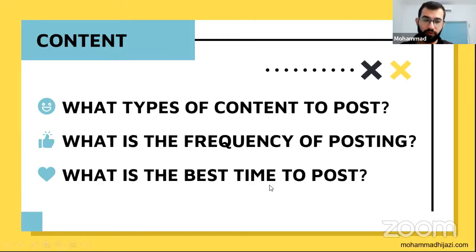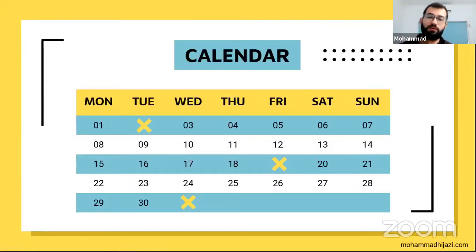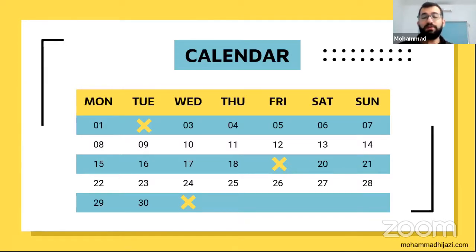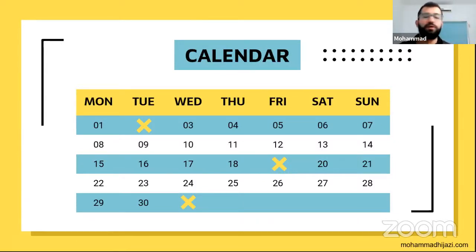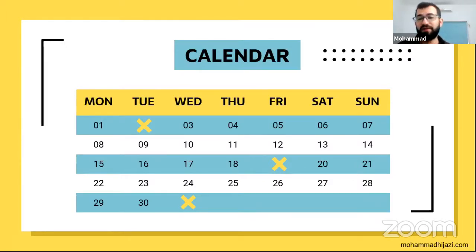To stay consistent and minimize the time and effort of social media management, it's very important to create a social media calendar. If you put in a few hours at the beginning of the month to outline everything — all promotions, ideas, photos — and get a designer to help prepare assets in a couple of days, you'll have everything set for the whole month. You can easily schedule posts on most platforms and focus on other parts of your business.